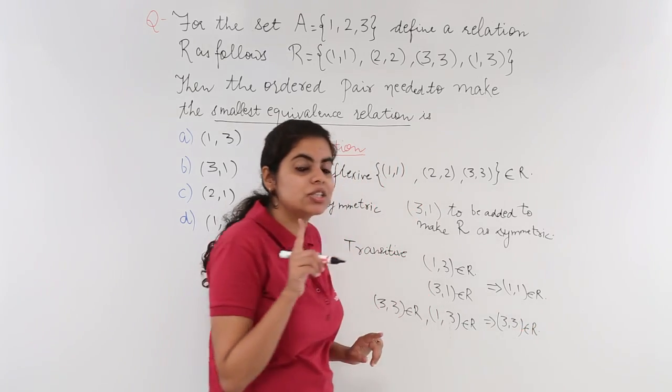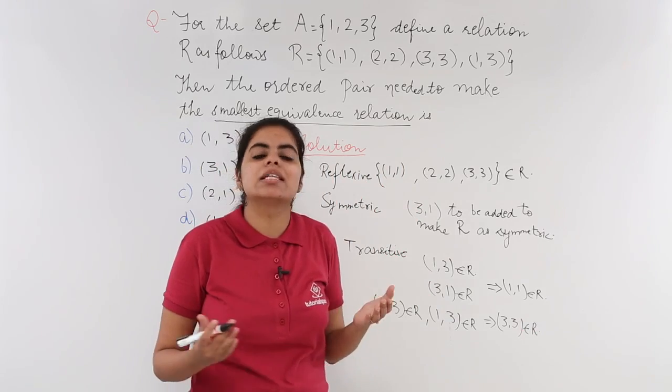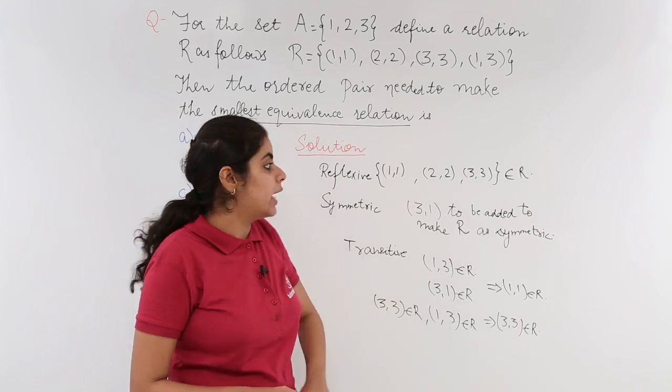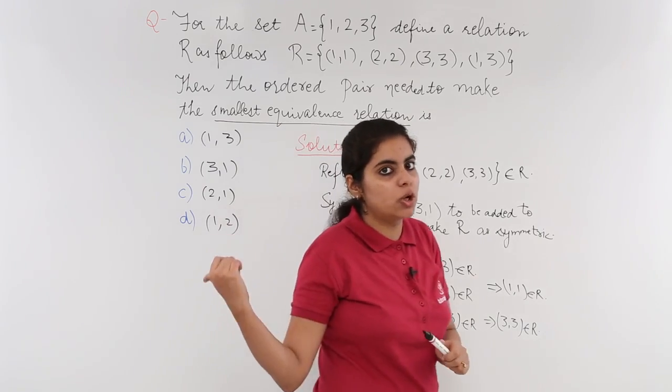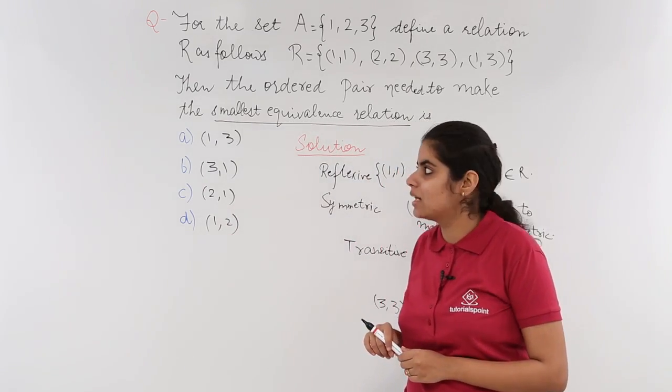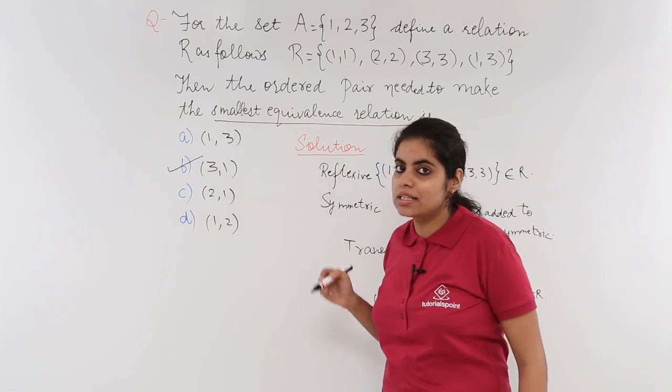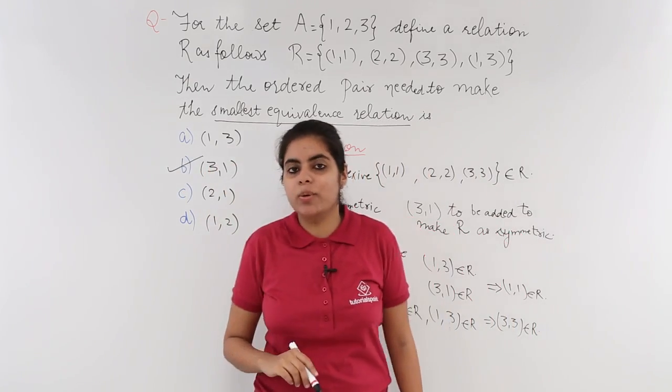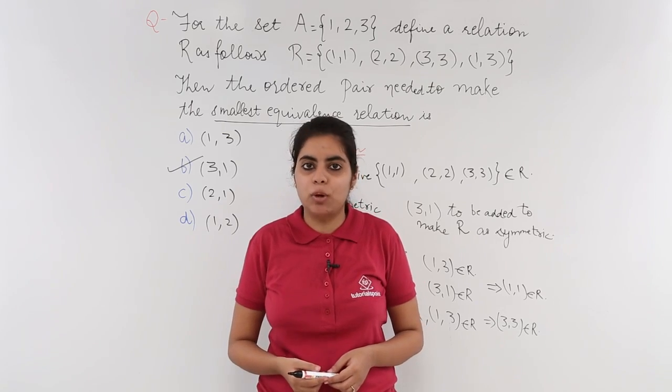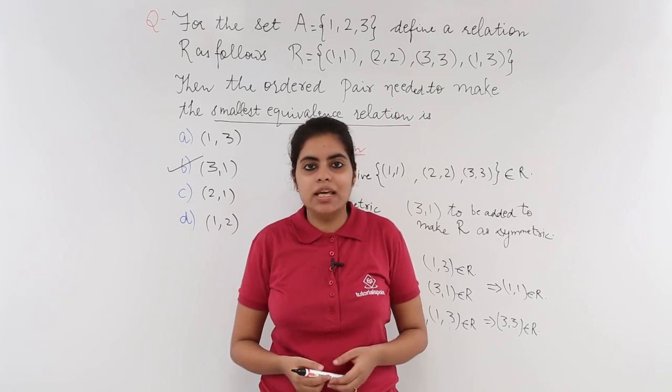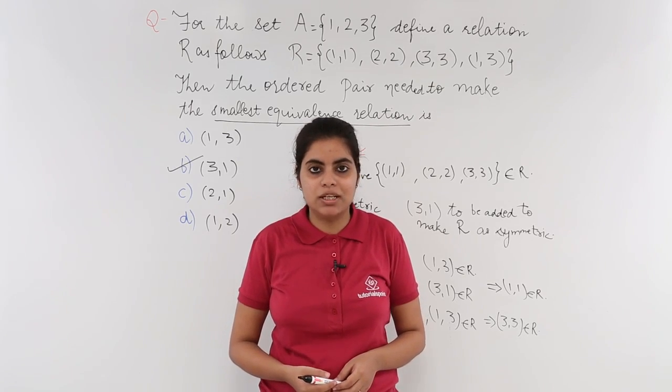That means only one relation has to be added to make this relation as the smallest equivalence relation. And what was added? (3,1) was added. Let's see which option is (3,1), and that is our answer. So yes, I have option number B as (3,1). This is the answer. This was the question on equivalence relation, a very basic fundamental problem on equivalence relation. In the next video, we will be seeing some higher order thinking problem for the equivalence relation.